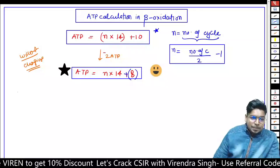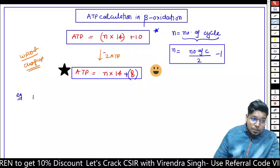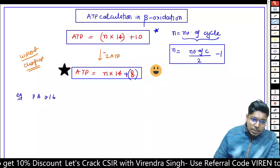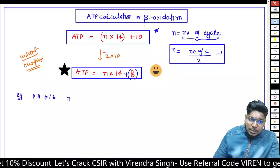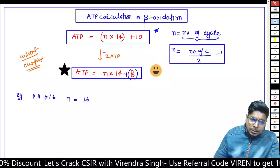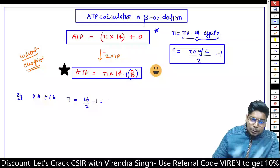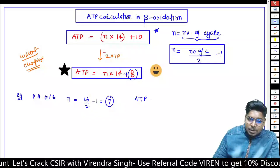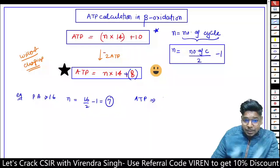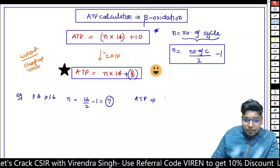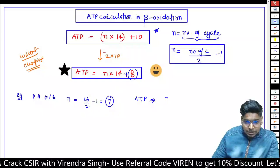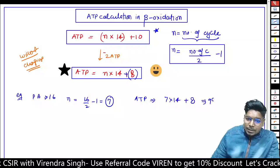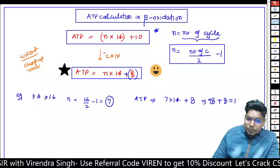Let me explain with an example. Palmitic acid has 16 carbons. Number of cycles N = 16 divided by 2 minus 1, that should be 7. So N equals 7. ATP = 7 into 14 plus 8, that is 98 plus 8, which should be 106.